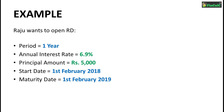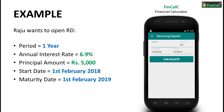Let's see how Raju will earn interest on his deposits every month. We'll use our free Android app Finkelsey, which is a financial calculator app. Since Raju wants to deposit Rs 5,000 every month, we'll enter the deposit as 5,000. The interest rate is set as 6.9% and we set the start date as 1st of February 2018 and the end date to 1st of February 2019.